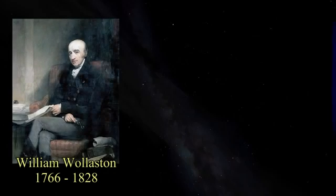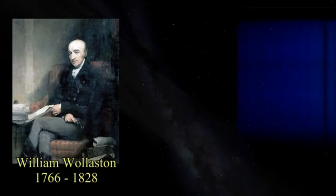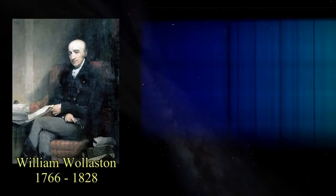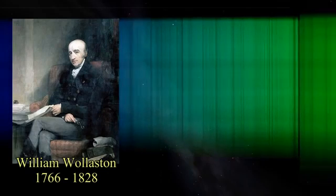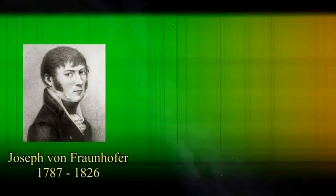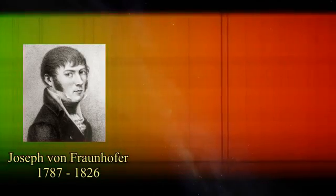In 1802, William Wollaston was investigating the refractive powers of various substances and discovered dark lines in the sun's spectrum when shone through a prism. He also found that candlelight produced distinct lines of colour. His findings were published in the Philosophical Transactions of the Royal Society of London, but he couldn't explain them. In 1814, Joseph von Fraunhofer repeated Newton's classic experiment of shining sunlight through a prism, but with intense magnification, discovering more than 600 dark lines in the sunlight spectrum. Today more than 30,000 are known.